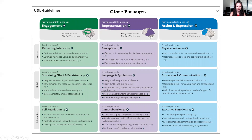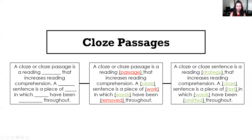Lastly, let's look at the cloze passages activity. This activity falls under the representation element of UDL. For representation, instructors can promote understanding across languages with this activity, and it is a good way for students to practice activating and supplying background knowledge. Cloze passages is an activity in which keywords are deleted, covered up, or blocked out, and students use context clues to determine the missing words. This helps students understand how language works and think critically about a text. It can be used in an English class for grammar, in any course for reading comprehension, or even with students' own papers to help them identify overused words and replace them with synonyms.